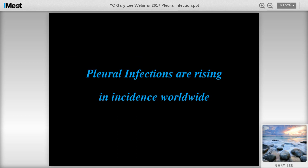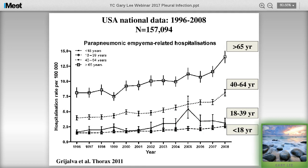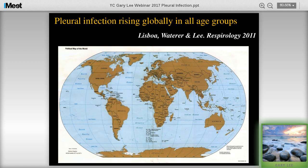Unfortunately, pleural infections are still rising in incidence around the world. This is national data from the USA from 1996 to 2008 - hospital admissions per 100,000 people divided into age groups. Among any age group, there has been a trend of increasing incidence of hospitalization for pleural infection. The trend is strongest in those aged 40 to 64 and much more so in those over 65. This has also been shown in many other countries - all the asterisks indicate places that have published national or regional data suggesting their pleural infection rates are still going up.